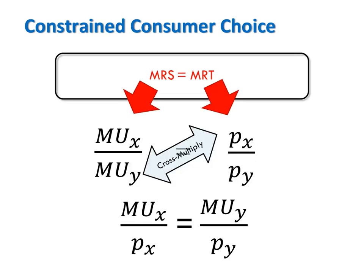There's another way to express this tangency condition that is very intuitive — it's called the bang-per-buck approach. Recall that the MRS is, by definition, the ratio of MUX to MUY, and the MRT is, by definition, the ratio of PX to PY. Through a simple algebraic transformation — multiplying both sides by MUY and dividing both sides by PX — we can cancel MUY on the left-hand side and PX on the right-hand side, leaving us with MUX over PX equals MUY over PY.